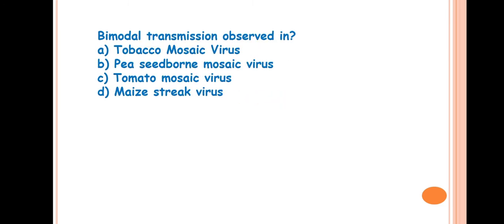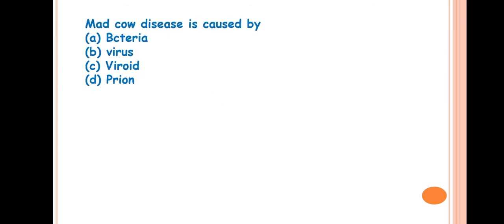Next question is, bimodal transmission observed in? Answer is pea seed-borne mosaic virus. This virus, pea seed-borne mosaic virus, was transmitted by aphid in bimodal fashion.